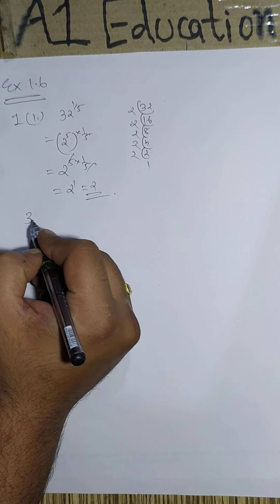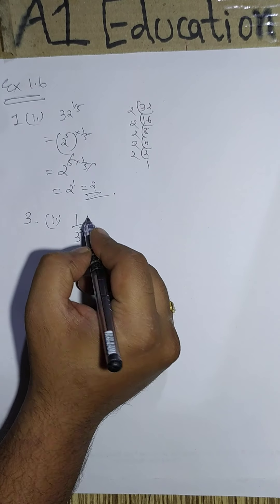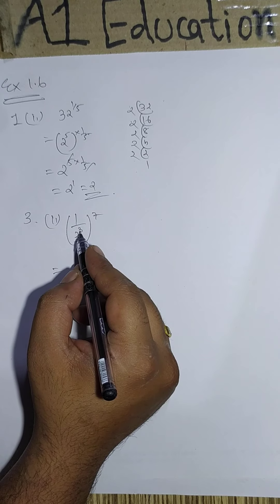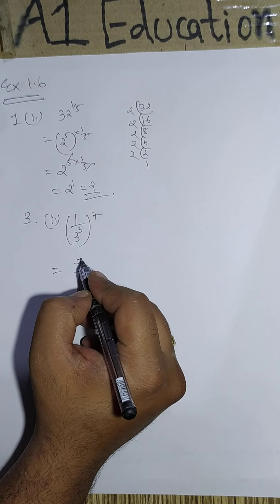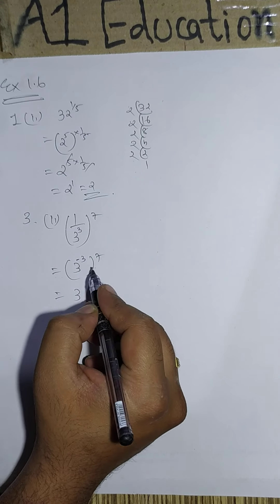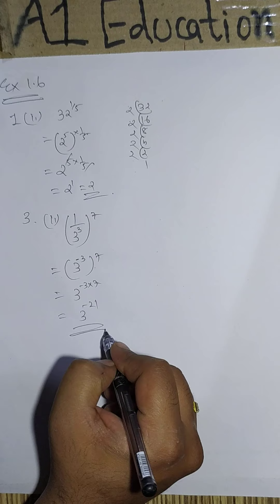Another question we take. 1 upon 3 cube raised to the power 7, 1 upon 5. Taking denominator to the numerator, power will become negative. As soon as bracket opens, the power will get multiplied. So minus 21. This is the answer.